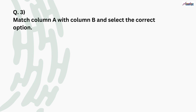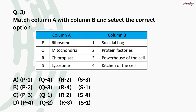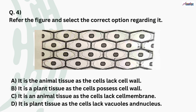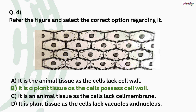Question three: match column A with column B and select the correct option. Here cell organelles in column A are to be matched with their functions in column B. If you are sure of just one option — for example, if you know that chloroplast is called the kitchen of the cell, that is R–4 — you can see that R–4 is matched in option B, so the answer is option B. Question number four: refer to the figure and select the correct option. We can easily identify this is a slide of onion peel, that is a plant cell. The correct answer is option B — it is plant tissue as the cells possess a cell wall.